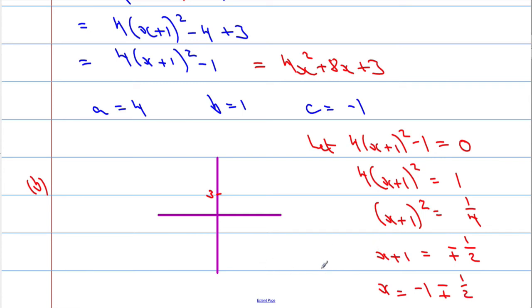So what does that give us? When x equals negative 1, take away a half. When x is negative 3 over 2, y is going to equal 0. And when x is, I'm going to add a half to this, which is going to give me negative a half, y will also equal 0.